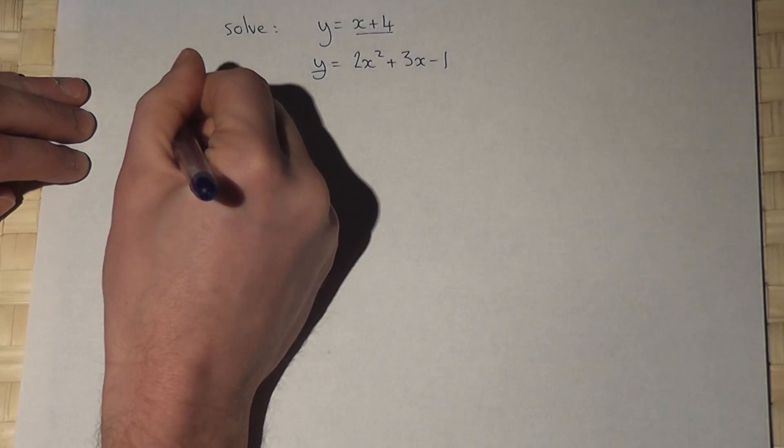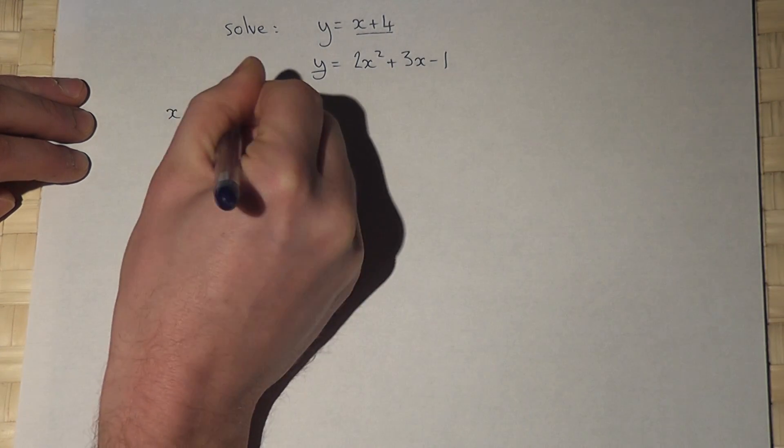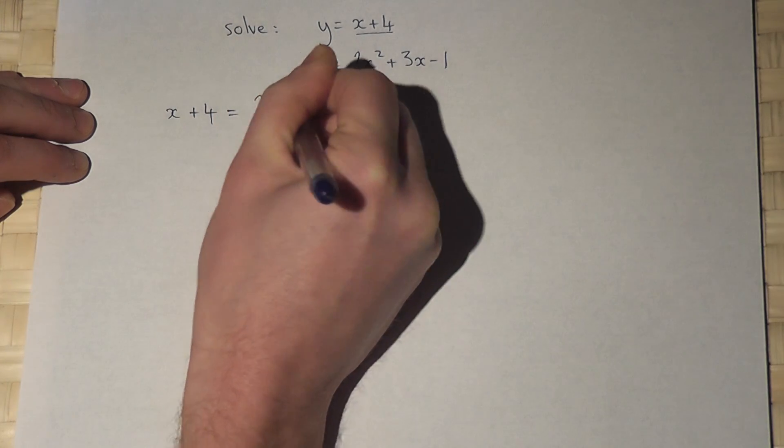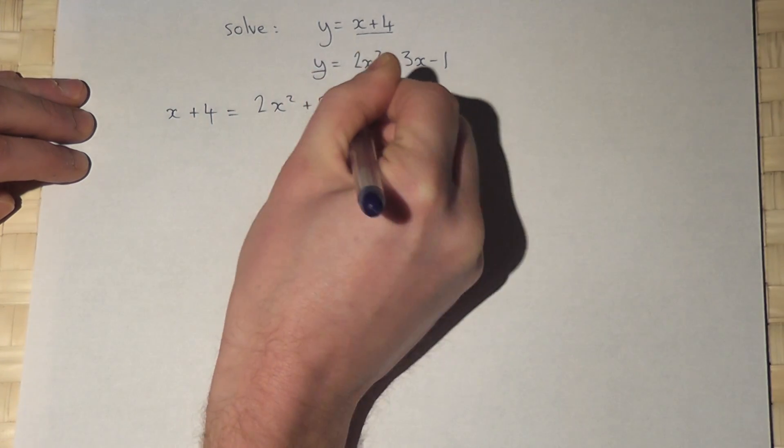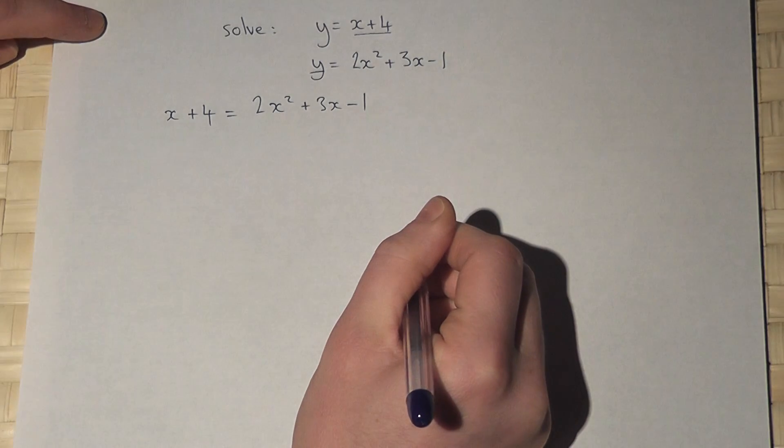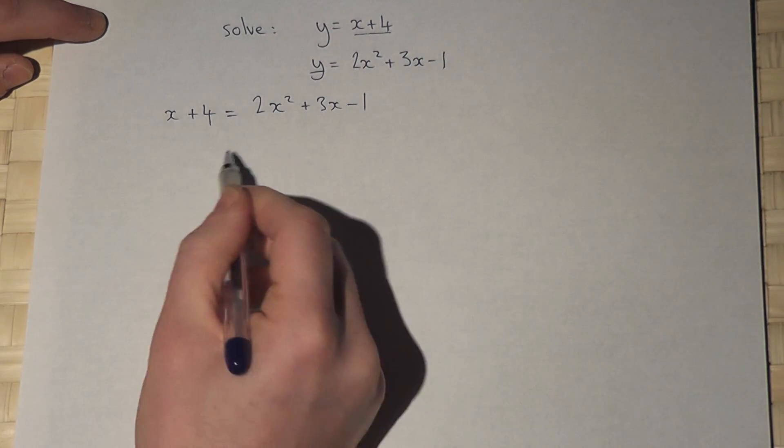So I get x plus 4 equals 2x squared plus 3x minus 1. Now, to solve this equation, I need 0 equals.